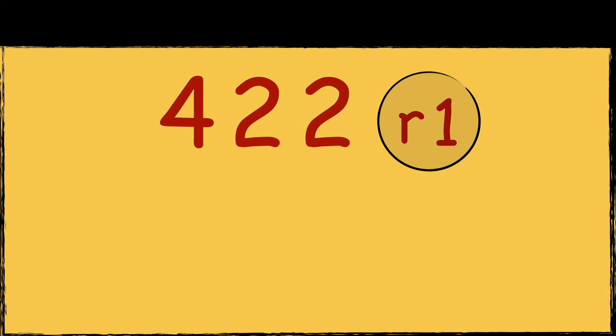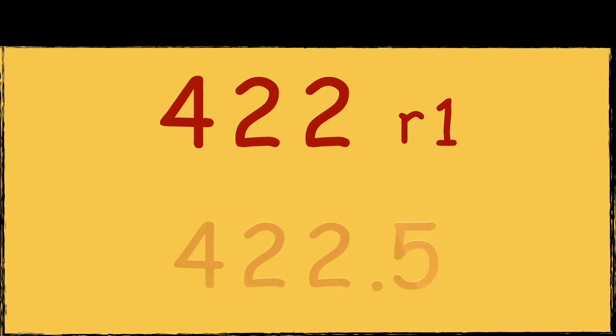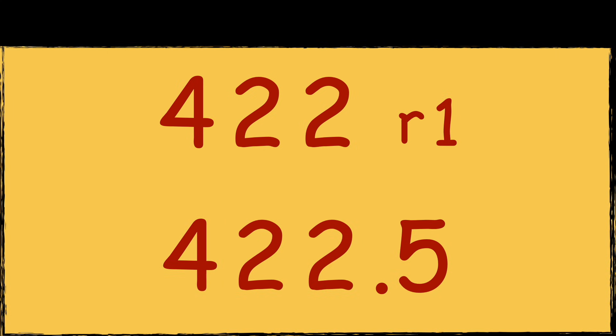A remainder is the amount that's left over when a number doesn't divide exactly into the divisor. It's important to note that a remainder isn't the same as using a decimal point. In this video we're just looking at what's left over, but in another video you can learn how to continue dividing using decimals.